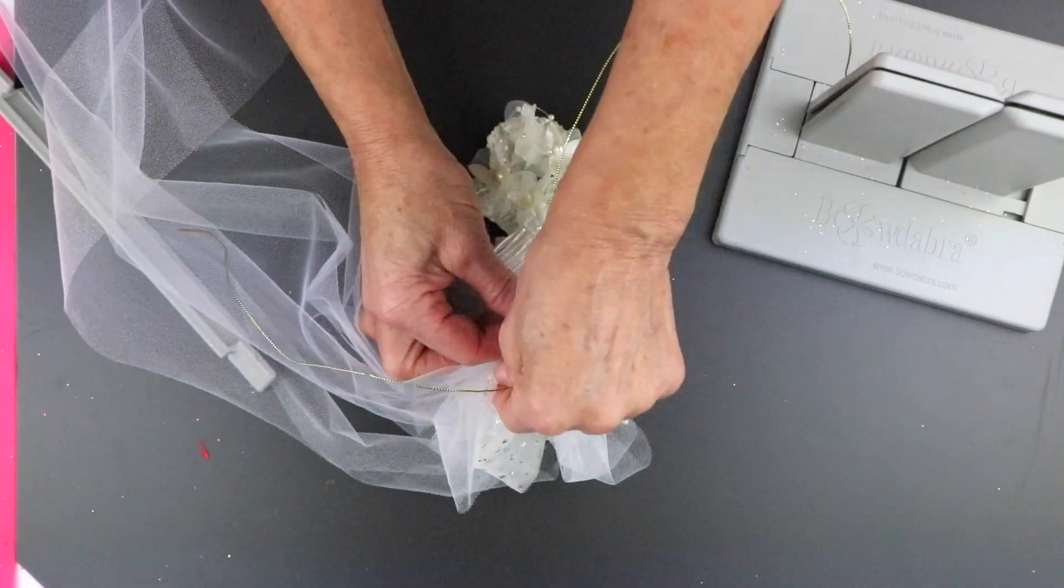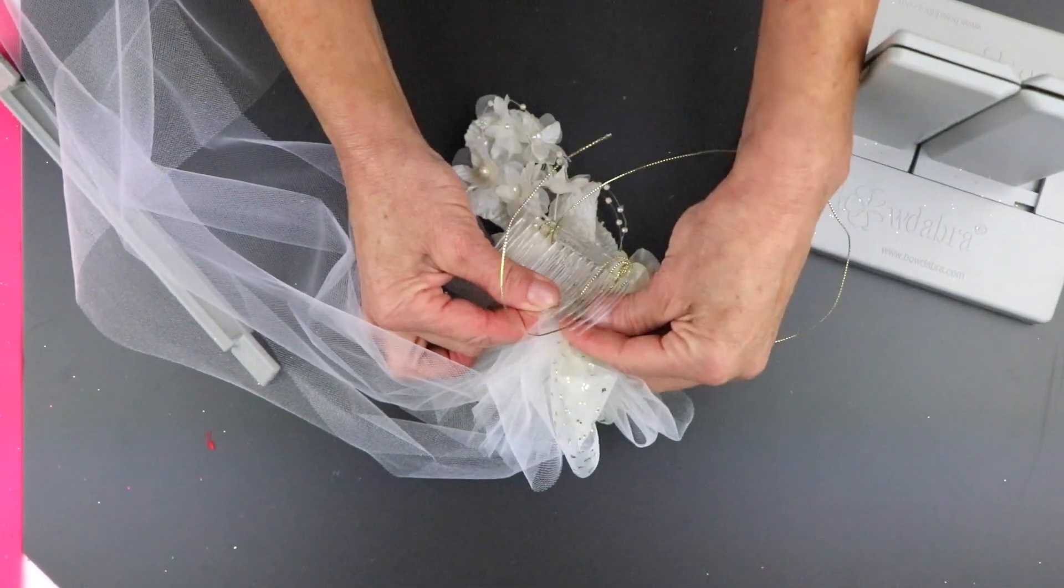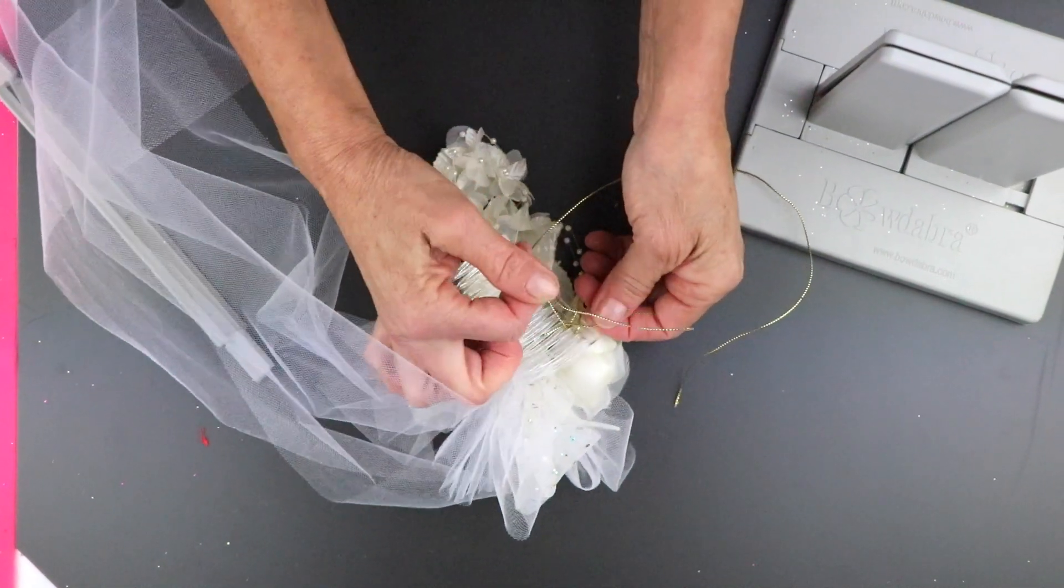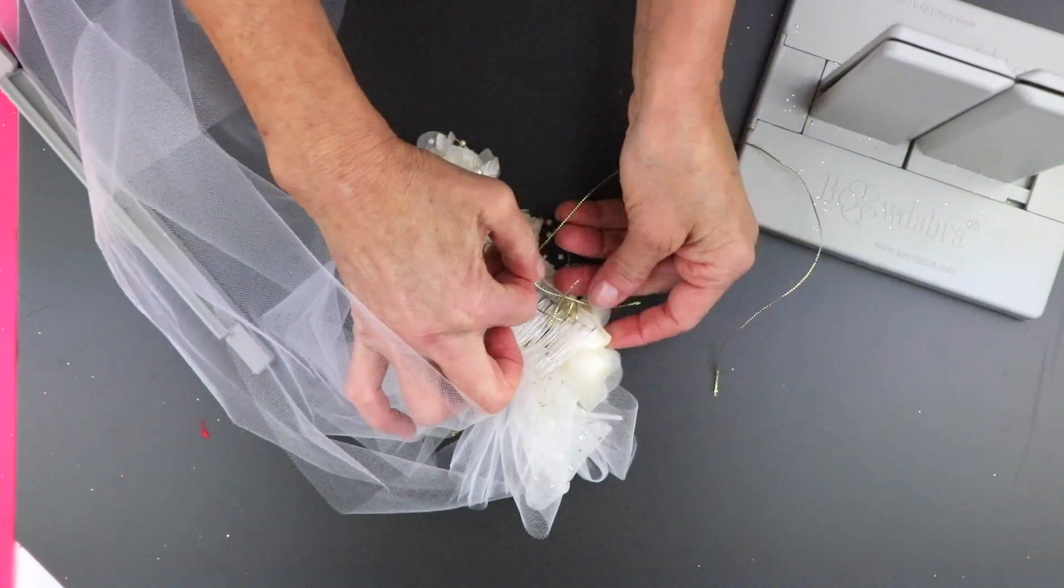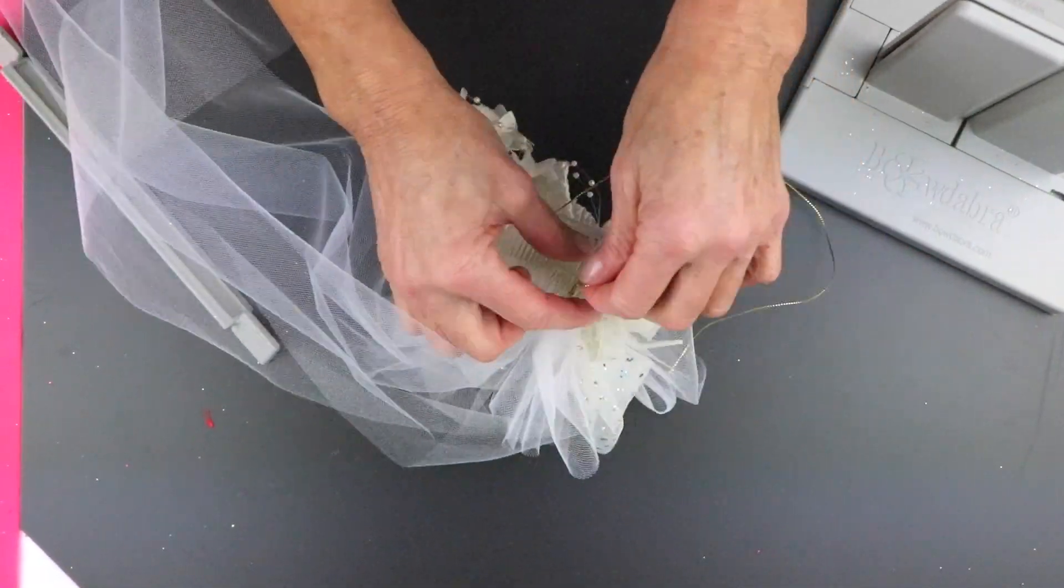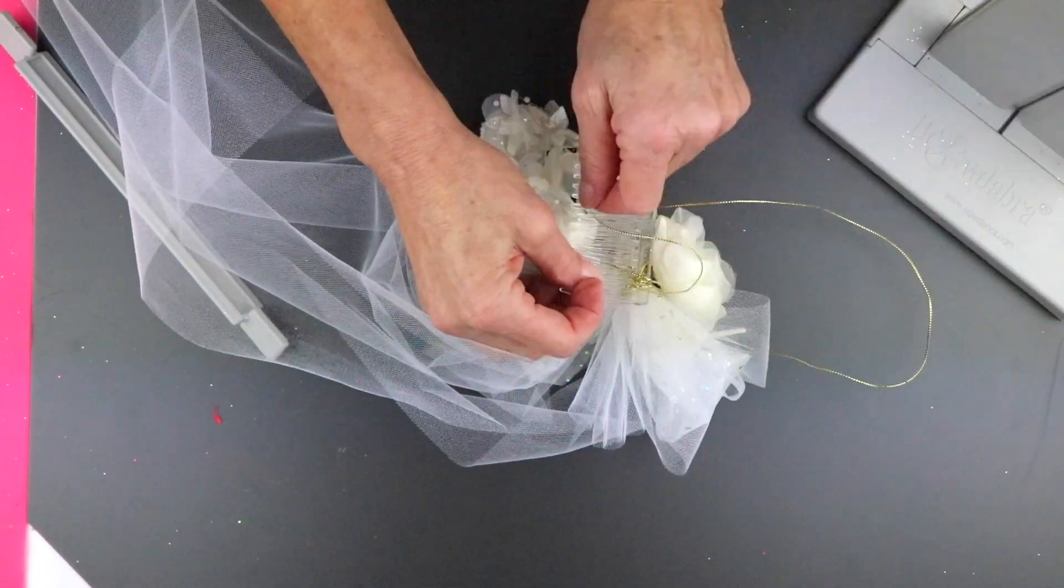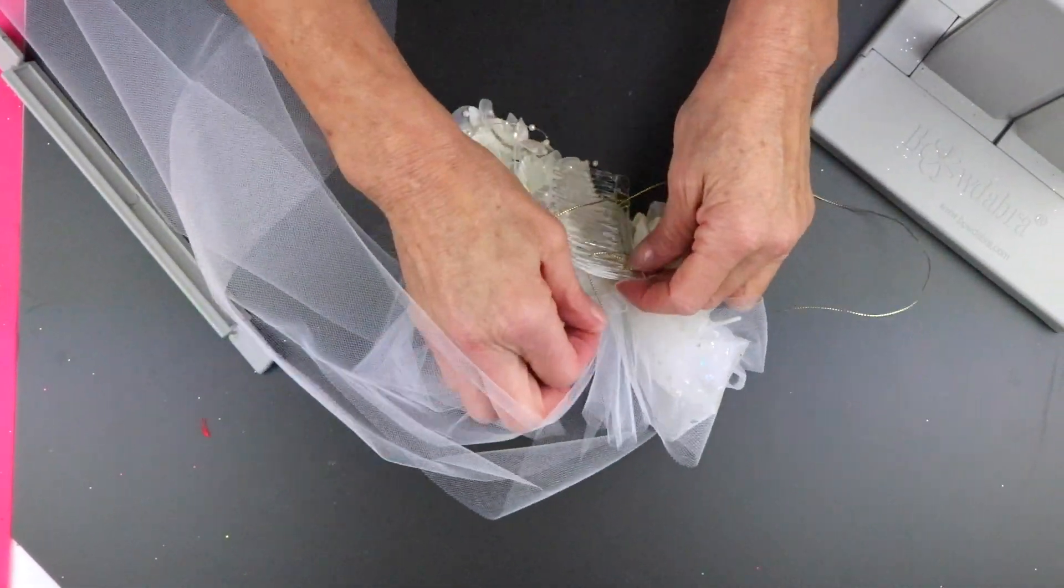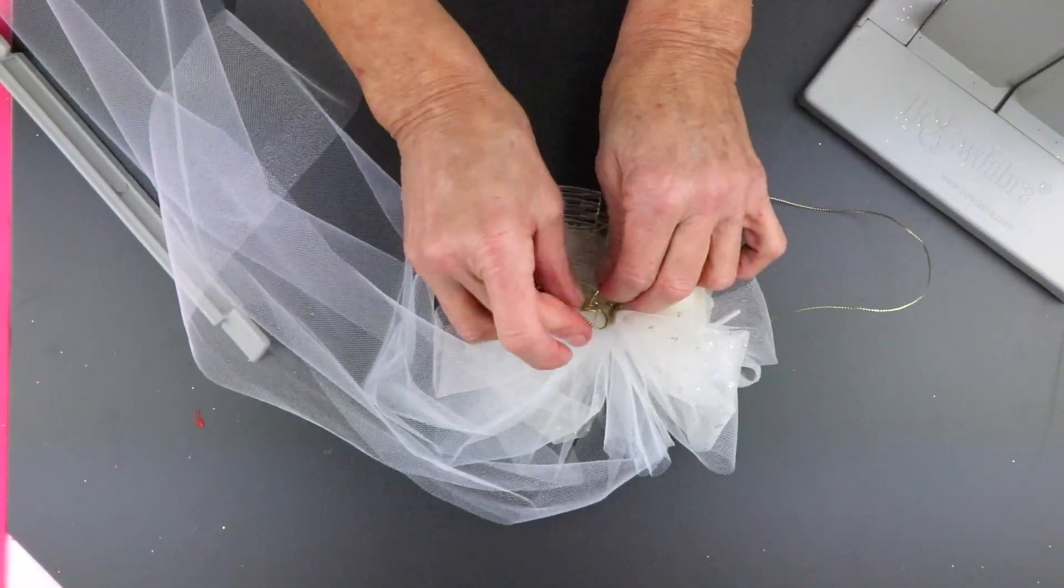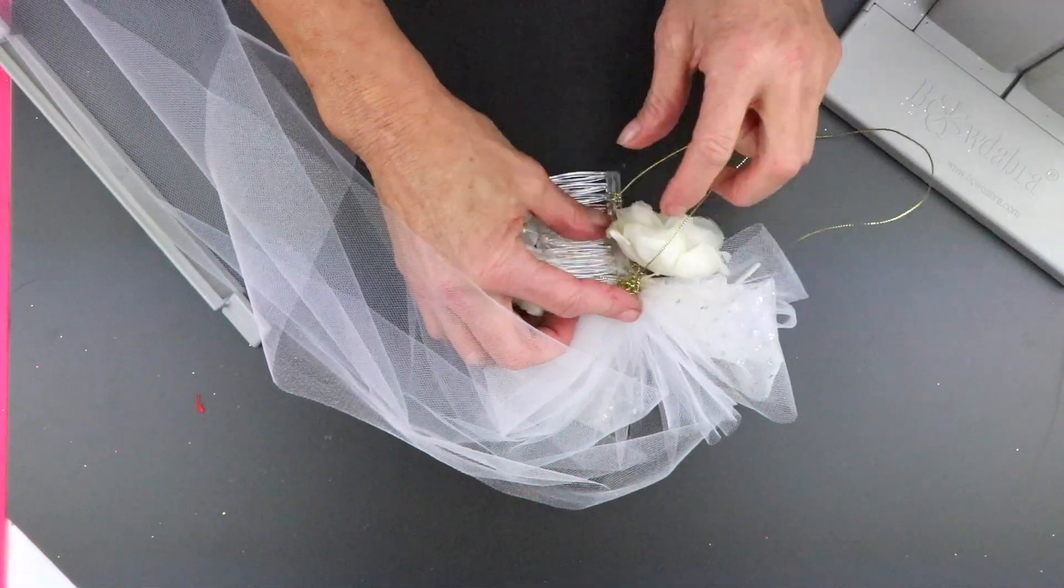The same thing here. And then this time I'm going to bring it around, but I'm going to leave a little bit of extra here so I can pull this through and knot it there. I'm going to do the same thing again on both sides so that it's really secure. One more time. So it's real tight.